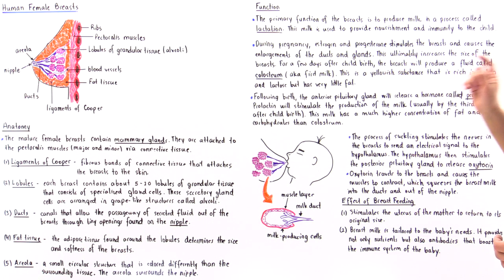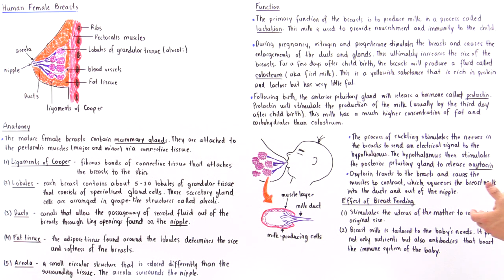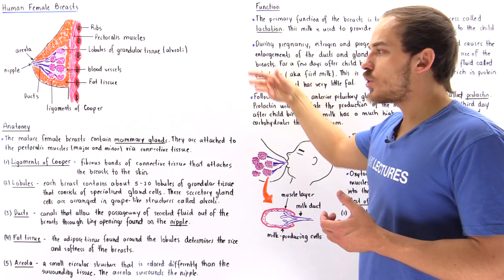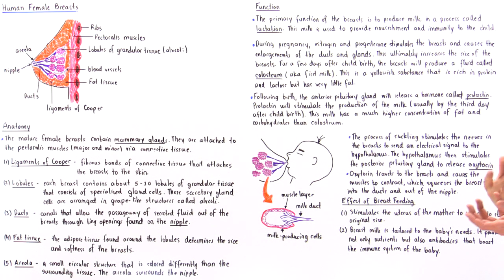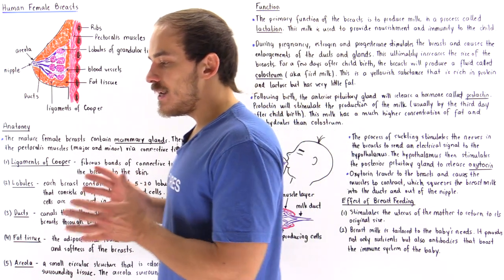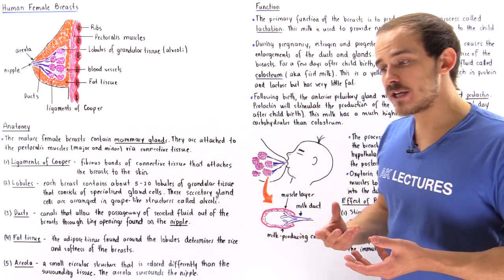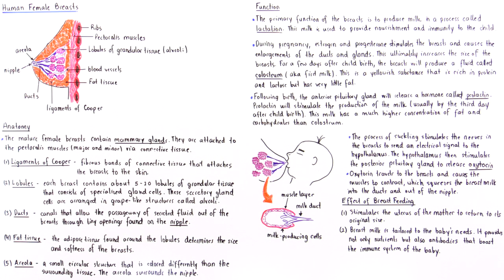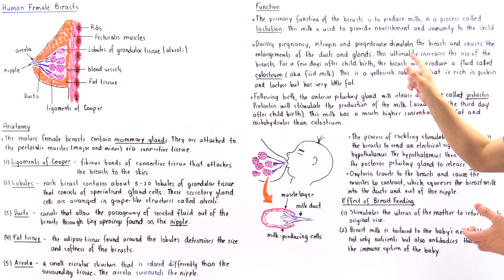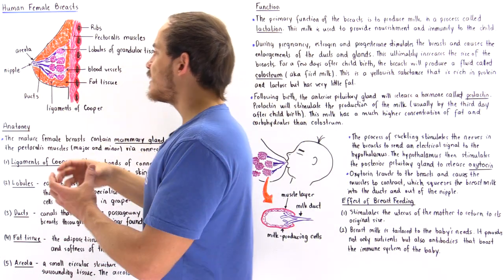Milk is also used to boost the immunity of that child. During pregnancy, the woman releases estrogen as well as progesterone. Initially these two hormones are released by the corpus luteum in the ovary, but eventually the placenta takes over and begins to release estrogen and progesterone. These two hormones stimulate the lobules of glandular tissue and the ducts to increase in size, ultimately increasing the size of the breasts.